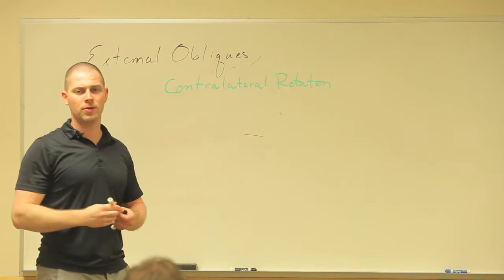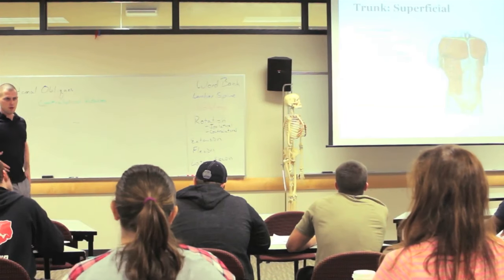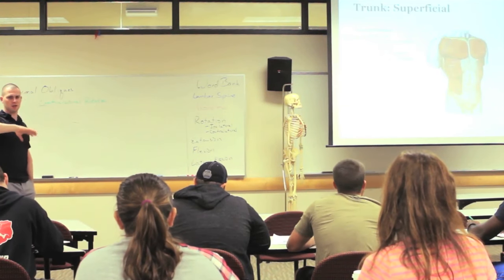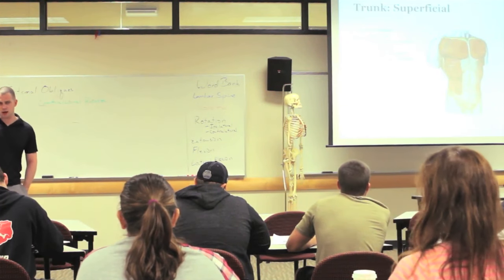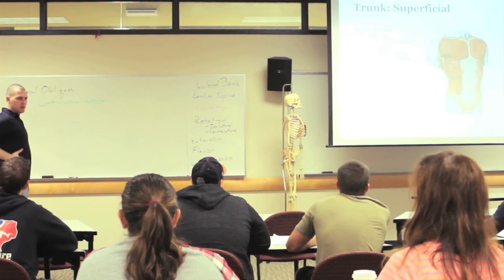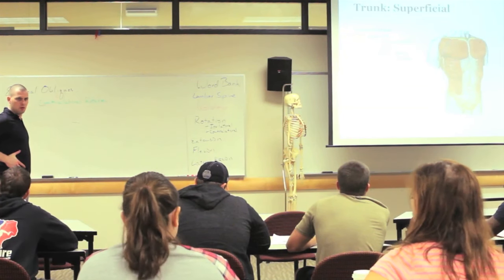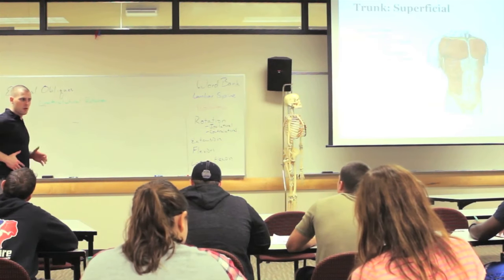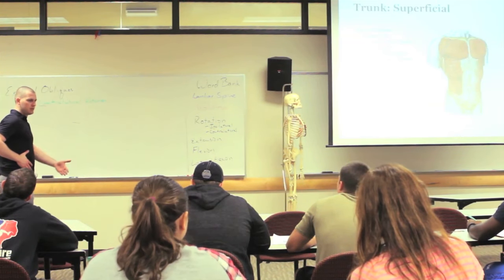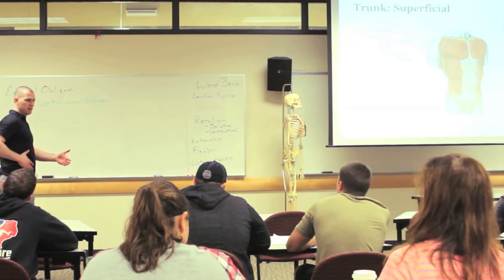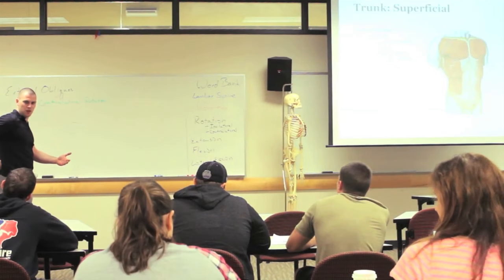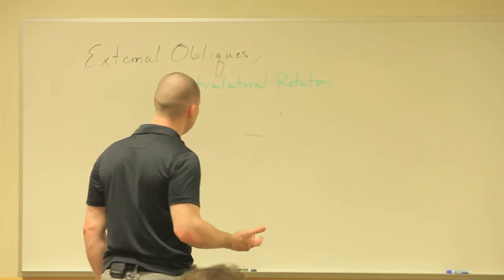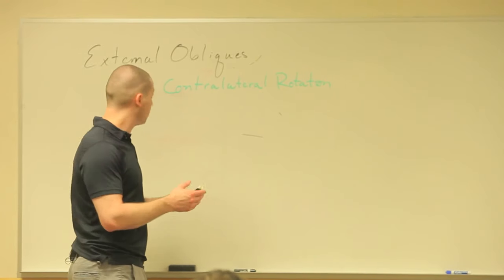What else might they do? We got the obliquity thing — muscles with a diagonal usually do rotation, we got rotation. But there are a couple other things this muscle will do. It's going to help with flexion, right? Because the obliques lie in front of the lumbar spine, that's the joint they cross, they're in front of it. So external obliques are flexors of the spine.